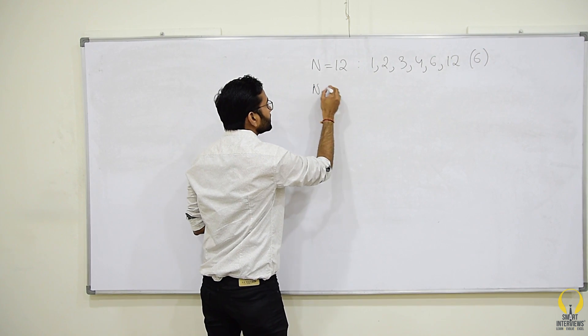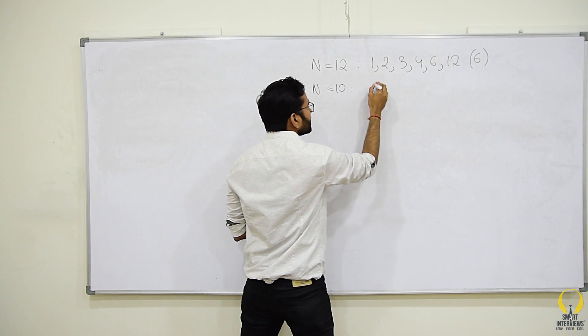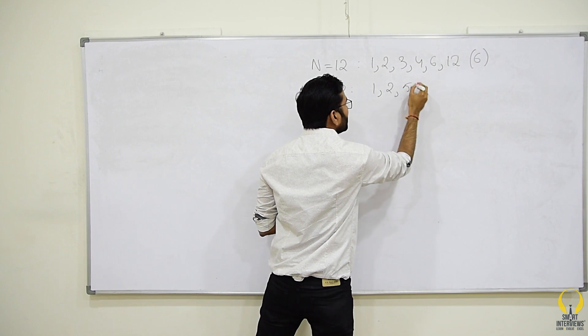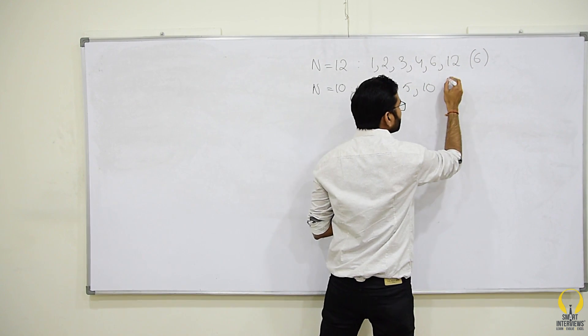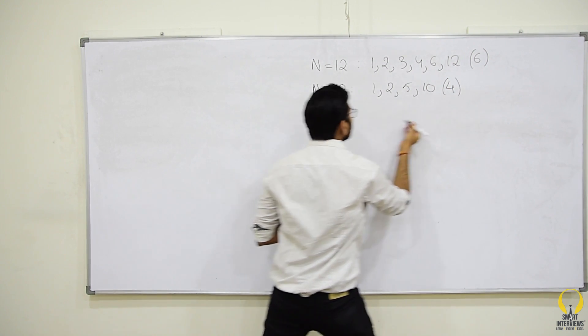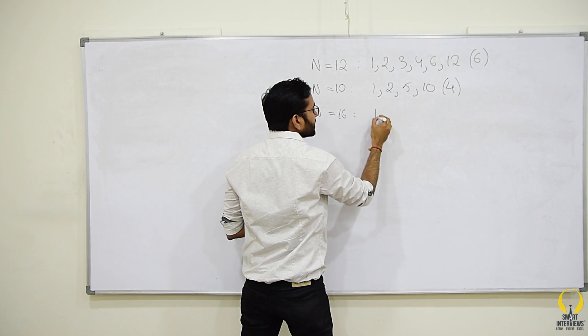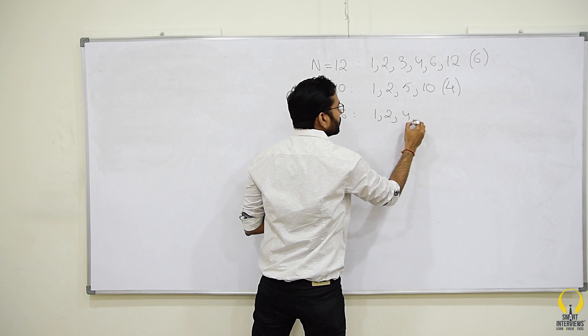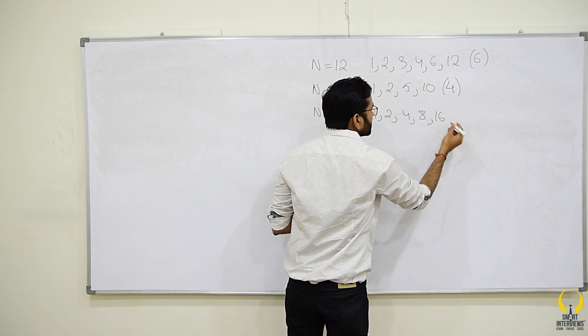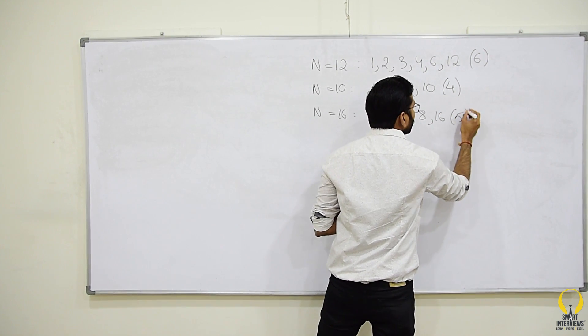If n is 10, divisors are 1, 2, 5 and 10, so output should be 4. If n is 16, divisors are 1, 2, 4, 8 and 16, so the output should be 5.